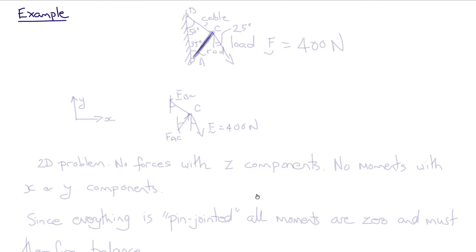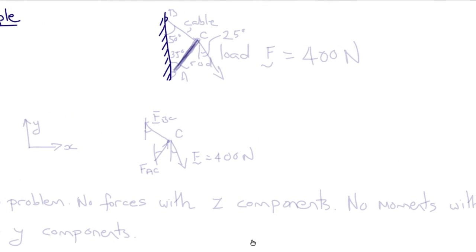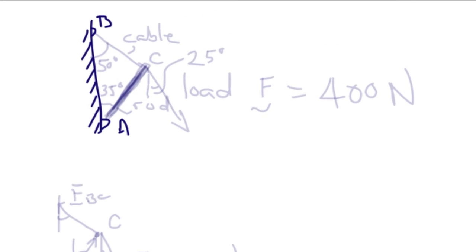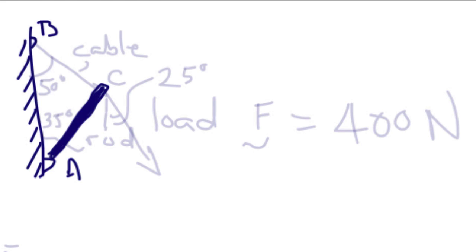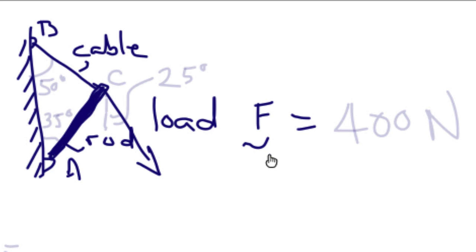So let's do a simple example that we can complete in class. So here's a wall with a pin-jointed structure. We have, at A and B, connections of the structure to the wall. The structure connecting A to C is a rod. And then we have a cable connecting B to C. Then an external force is applied at C, with a load of 400 Newtons.